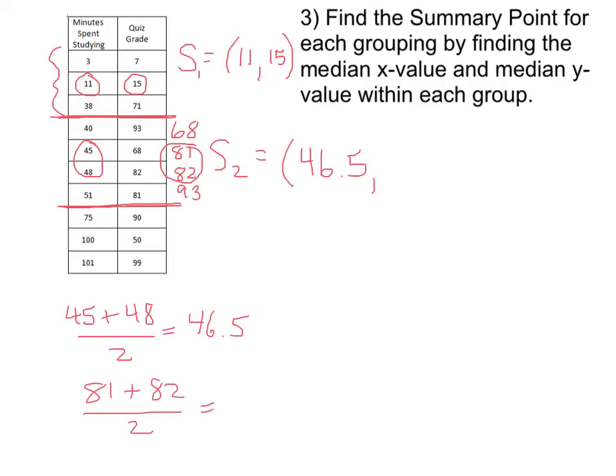I need to average them: 81 plus 82 divided by 2 comes out to be 81.5. So now I know the y-coordinate of my summary point for the second group of numbers.